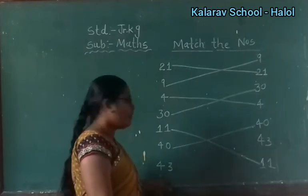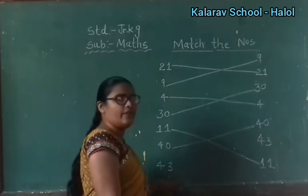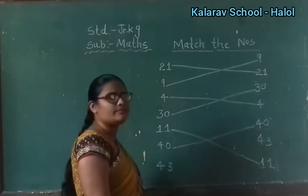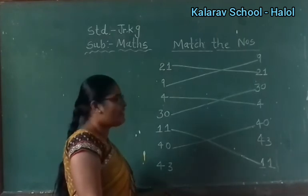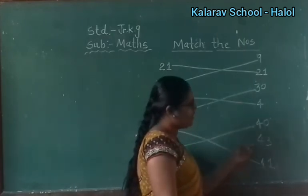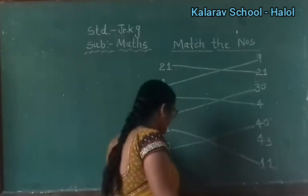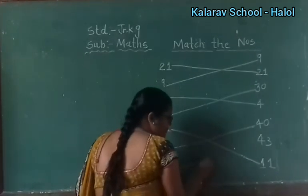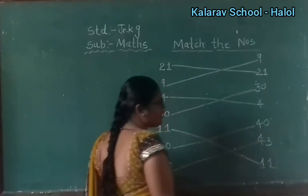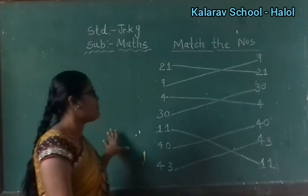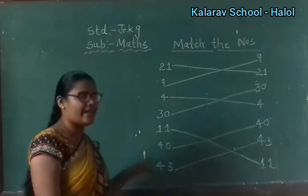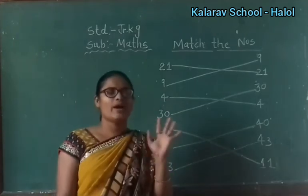Now last one: 43. Find out the number 43, children. Where is it? Yes, look — here. So match it. Understood, children — how to count and match, and match the same numbers to each other. Thank you. Bye.